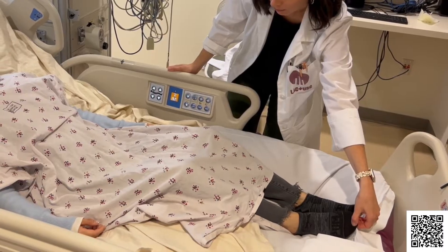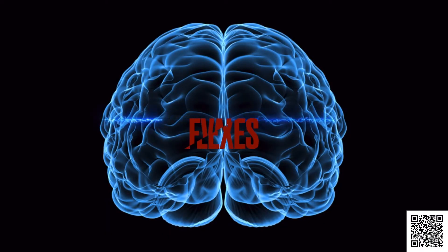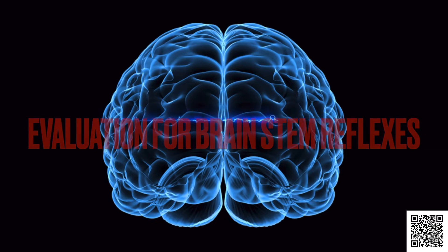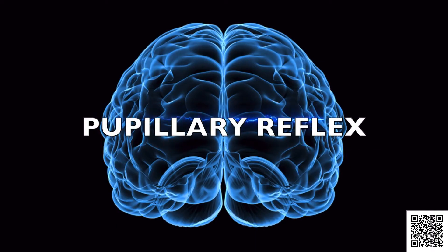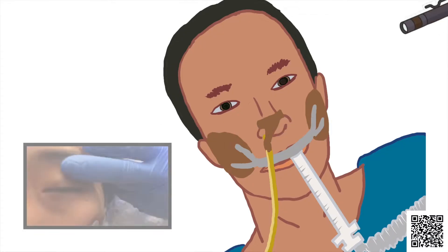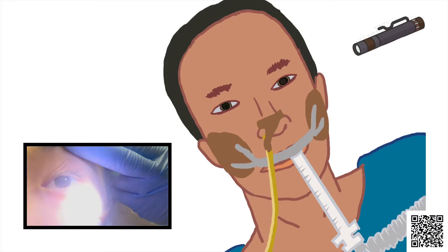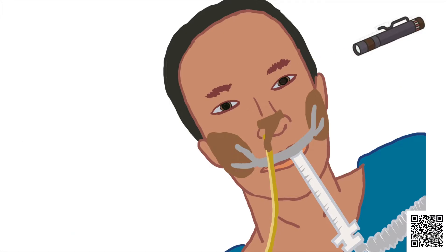These movements are spinal reflexes and do not involve the brain at all; they will not change the diagnosis of brain death. To evaluate for brainstem reflexes, the provider will test for the following: pupillary reflex — using a pen light, a light is shown into both pupils. A non-reactive, mid-size or larger pupil to bright light is an indication of absent pupillary reflex.